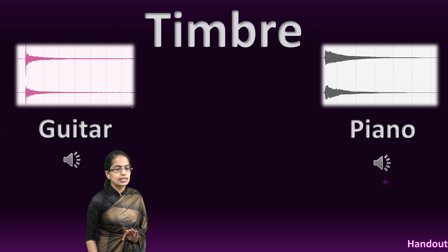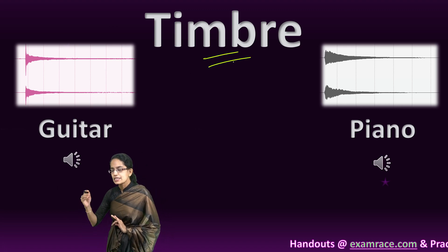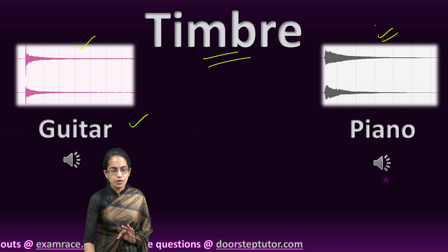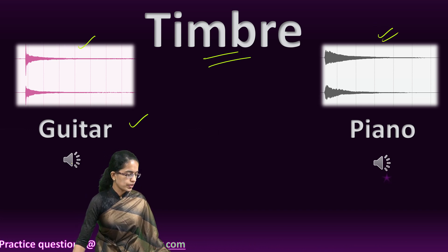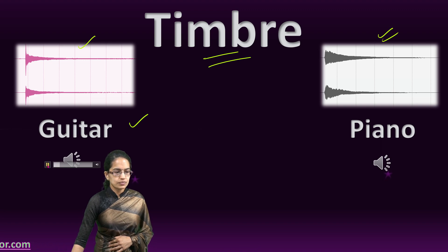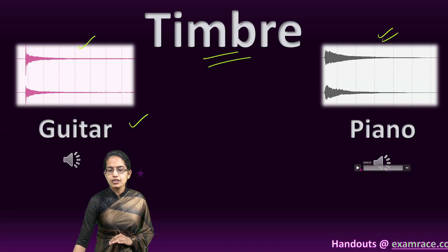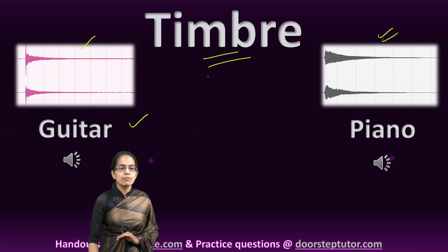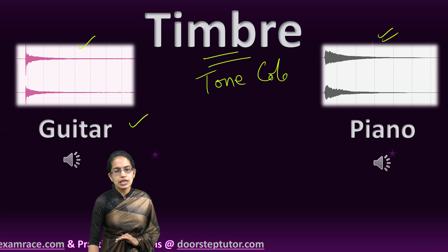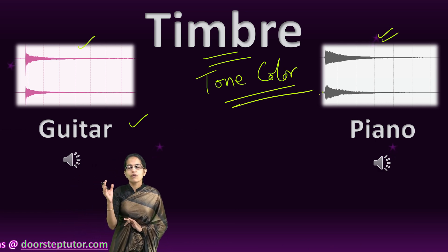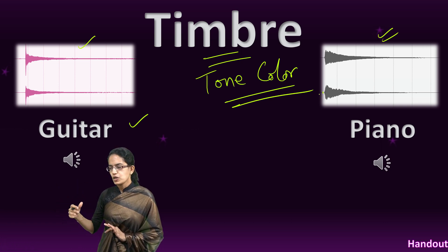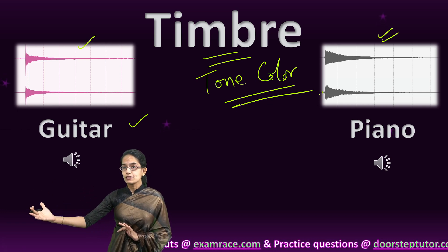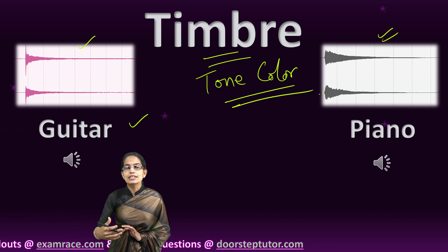The next property is timbre. Timbre is a mix of frequency and how it varies over time. We can compare the waveform of a guitar versus the waveform of a piano to see how sound waves actually vary. Let's play a note of guitar and then a note of piano — there is a difference, and this difference is what is known as timbre. Timbre helps us identify sounds, whether it is running water, a cat mewing, or a friend's voice.